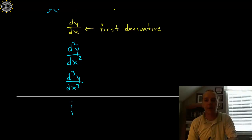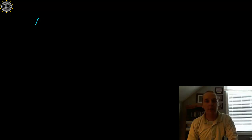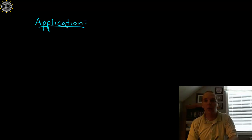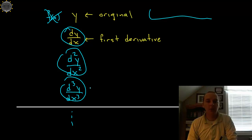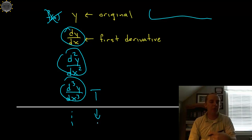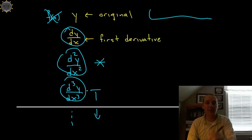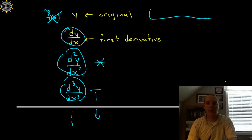It could be the hundredth derivative of y with respect to x as well. Now let's close out with one application. We'll wind up studying what these higher order derivatives mean. We know the first derivative means slope. But what do these higher ones mean? From the third derivative on down, we don't use them nearly as often as the first two, but the second derivative actually has a very substantial meaning. If you want to fast forward, it's related to concavity.